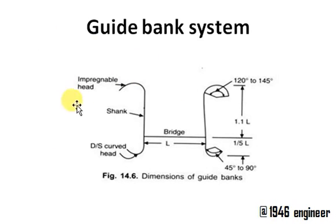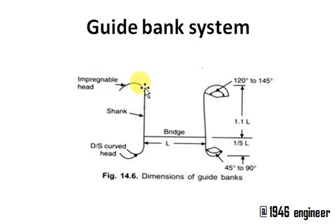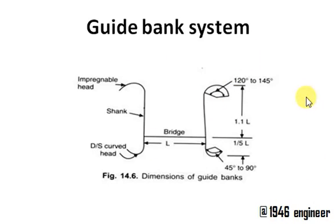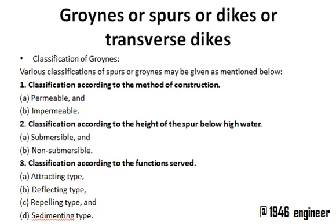Next we have the guide bank system. Suppose an area is lying here and water is flowing in this direction — you restrict the passage of the river, only allowing it to pass through a specific area, thereby restricting the width of the river and protecting adjacent areas. This is called the guide bank system, designed by Bell, also called the Bell bank system.